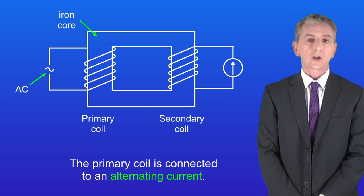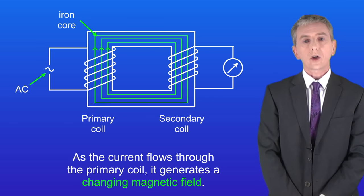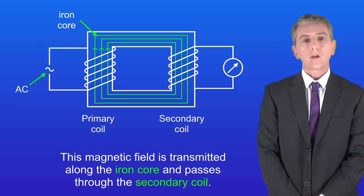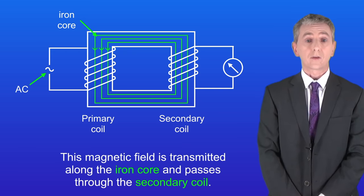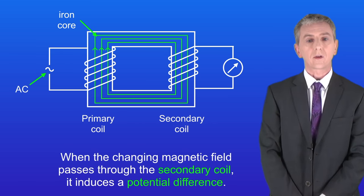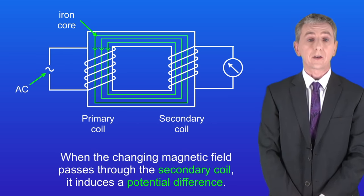The primary coil is connected to an alternating current. As the current flows through the primary coil, it generates a changing magnetic field, which we can see here. This magnetic field is transmitted along the iron core and passes through the secondary coil. When the changing magnetic field passes through the secondary coil, it induces a potential difference.